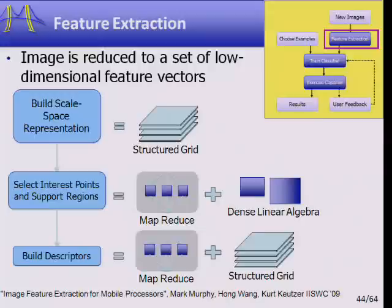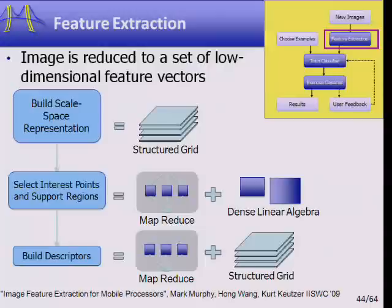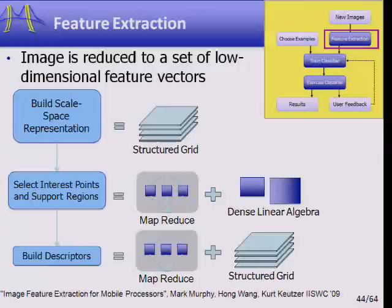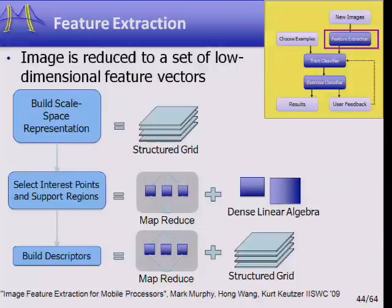I want to show how we can take this high-level example and systematically do a real architecture — not a toy architecture, but a real architecture that allows us to more easily parallelize. The high-level pipe and filter flow starts with feature extraction. The first step is building the scale space representation using a SIFT-style approach for creating feature vectors, using a structured grid routine. We then select interesting points from the scale space representation and support regions using MapReduce, with dense linear algebra in the individual computations.